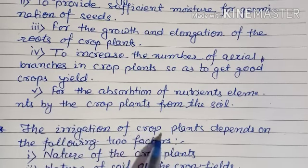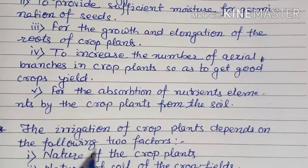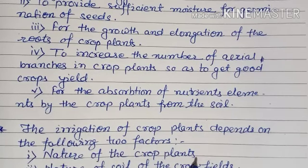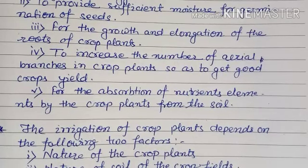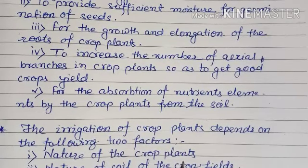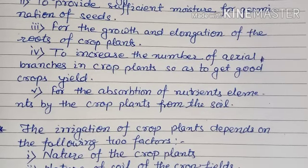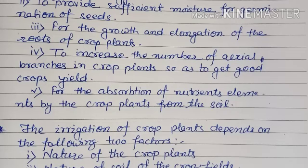The irrigation of crop plants depends on two following factors: the nature of the crop plants and the nature of the soil of the crop field. Regarding the nature of crop plants, the water requirement of different crops is different during the various stages of their growth and maturation. For example, paddy crops are transplanted in standing water and require continuous water supply, whereas other crops such as wheat, grams, and cotton require less water.